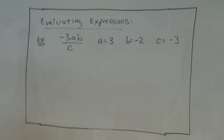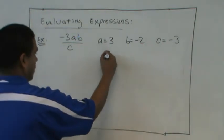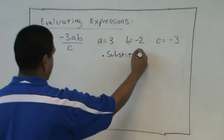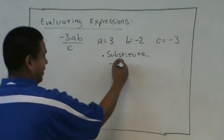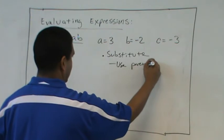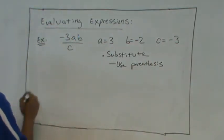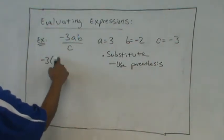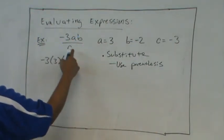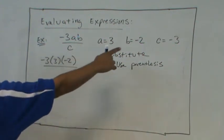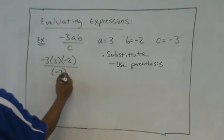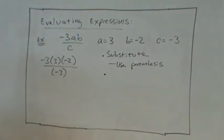What was the first step? Okay. Substitute. Substitute. Very good. Substitute. And when we substitute, we should use parentheses. Parentheses. Parentheses. Let's use parentheses. So we have negative 3, parentheses, 3 times 3. Good. Parentheses. Negative 2. Negative 2. And what was C? And what was C? Negative 3. Negative 3. And after we substitute with parentheses. Follow the order of operations. Follow the order of operations.